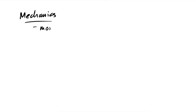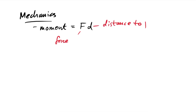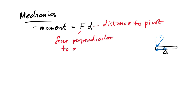In mechanics, a moment (turning force) equals F × d, where F is force and d is the distance to the pivot. However, if the force acts at an angle, you need the component of force perpendicular to the distance — so you multiply by cosθ or sinθ depending on the angle given. Similarly, work done W = Fs (where s is displacement), and again if the force is at an angle to the motion, you multiply by cosθ.